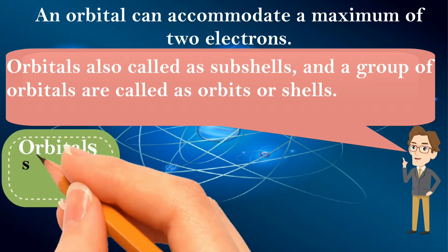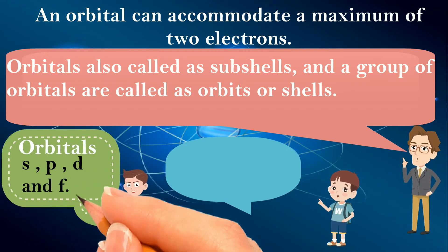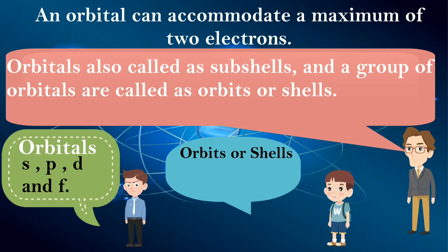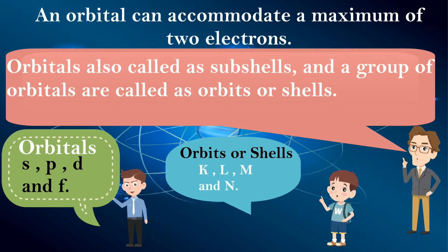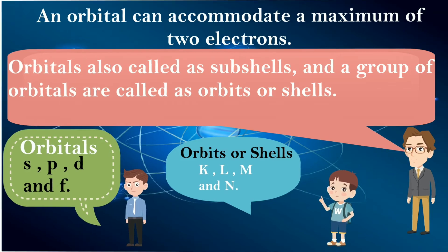Different types of orbitals are S, P, D, and F. The different types of orbits or shells include K, L, M, and N.